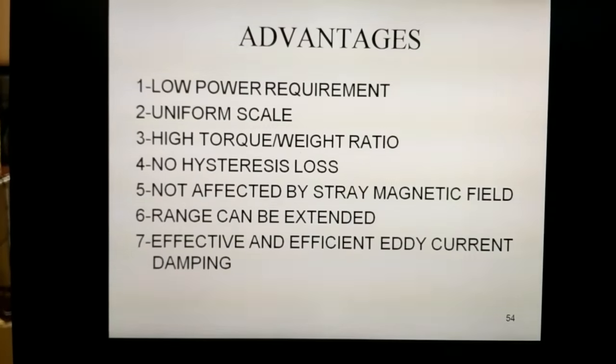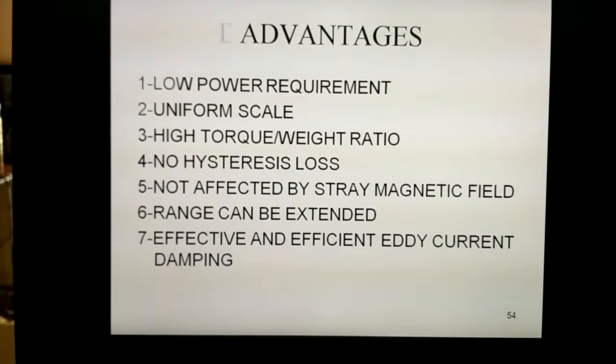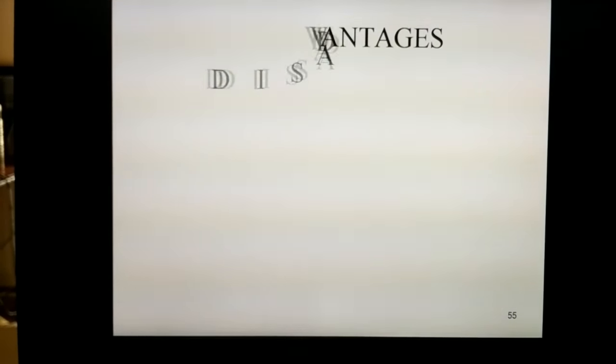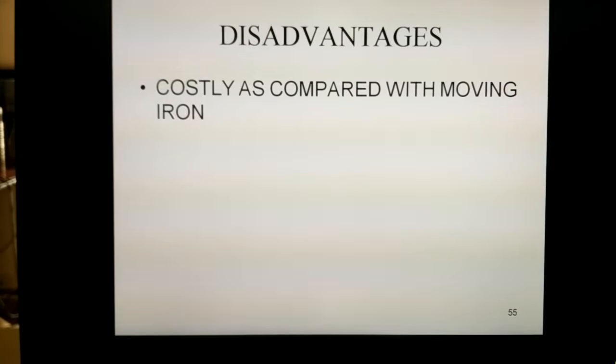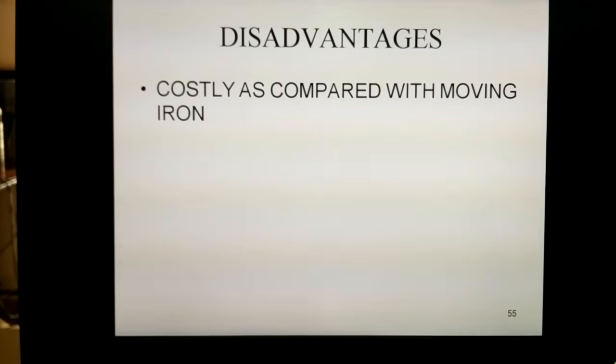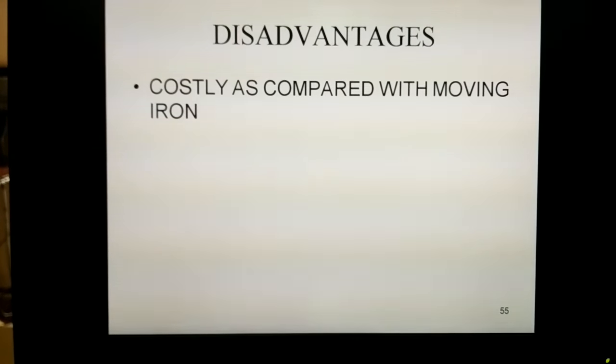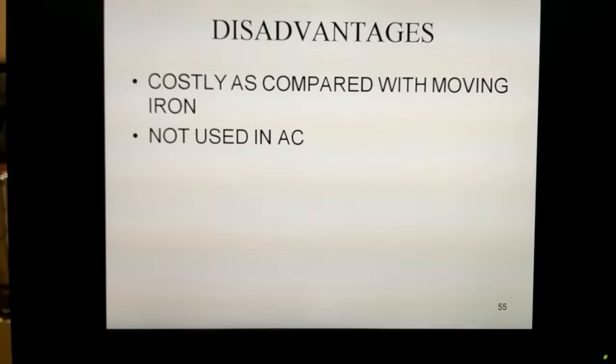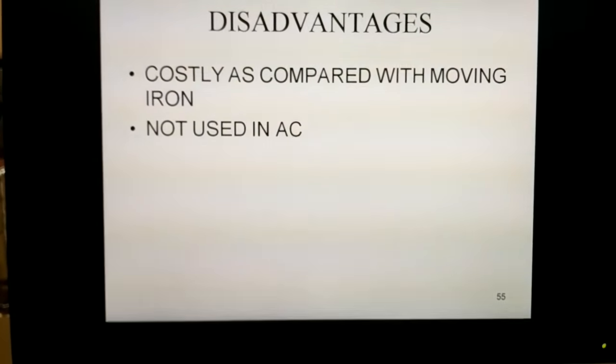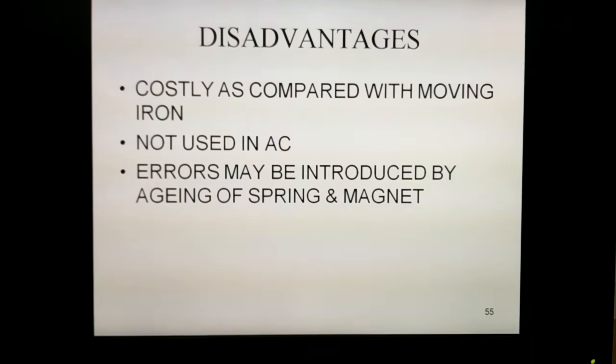Now we will see the disadvantages of PMMC instruments. These are costly as compared to moving iron instruments because in the iron instrument we have moving iron, and in this instrument we have a coil. It cannot be used for AC measurements; it is used only for DC.